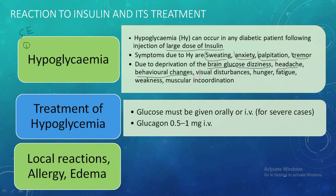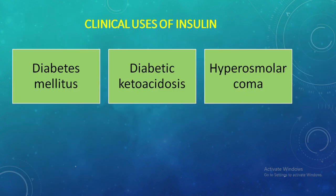Additional symptoms of hypoglycemia include behavioral changes, visual disturbance, hunger, fatigue, weakness, and muscular incoordination. Treatment involves oral glucose or IV glucose in severe cases; glucagon 0.5 to 1 mg IV is also preferred. Other local reactions include allergy and edema at the injection site. Major clinical uses of insulin are diabetes mellitus, diabetic ketoacidosis, and hyperosmolar coma.